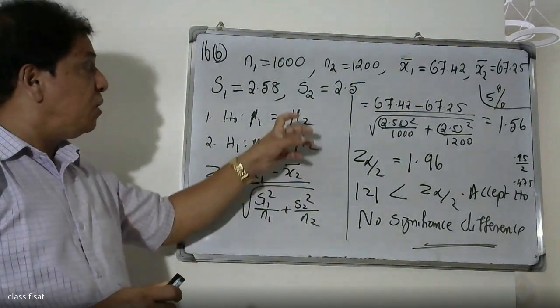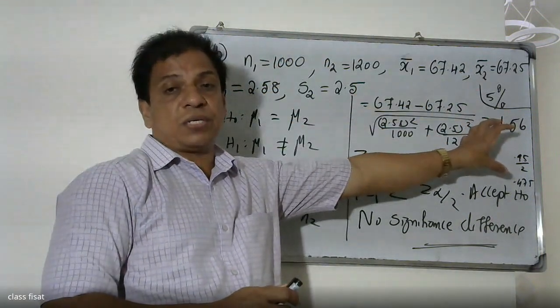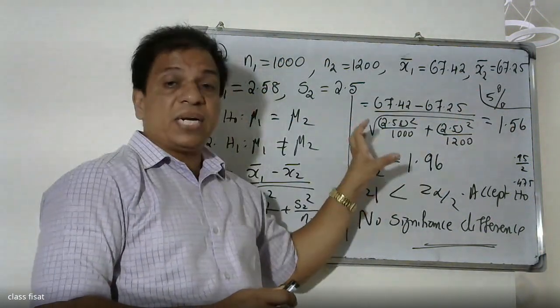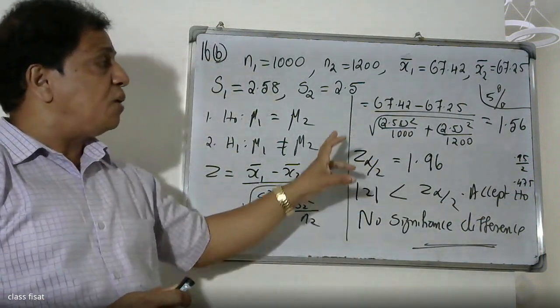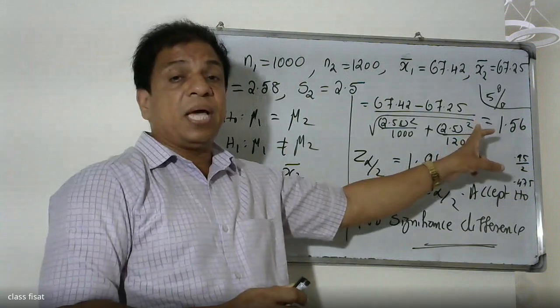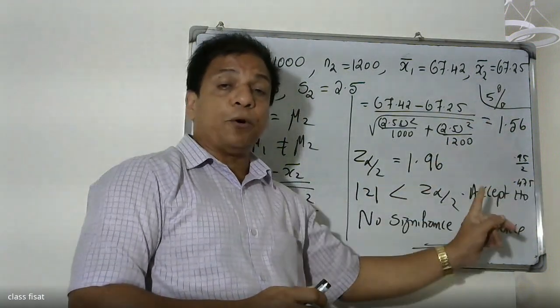This formula, substitute in the table of Z. The value is 1.56. In Z α/2, for 5% level of significance, 0.475 gives the value 1.96.